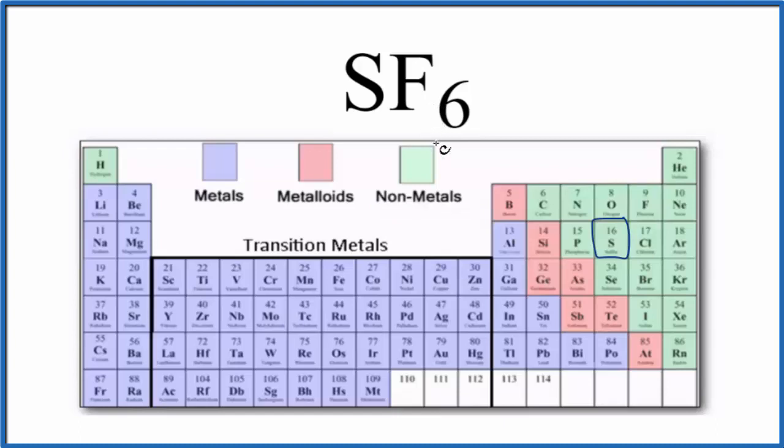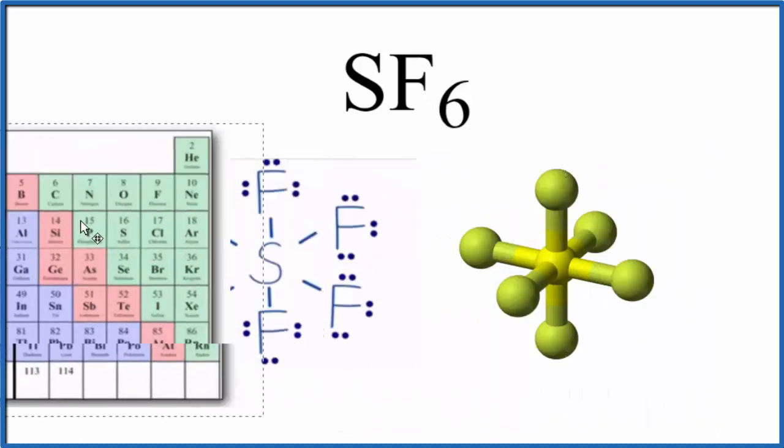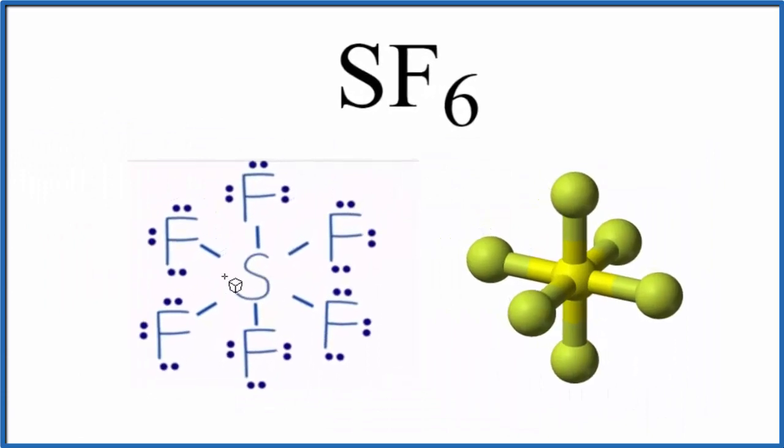Let's take a look at the Lewis structure for SF6. Here's our Lewis structure. We have sulfur in the center and then the fluorines around the outside.